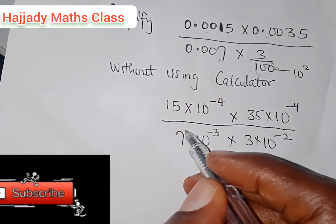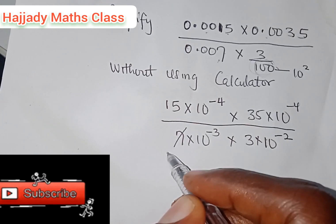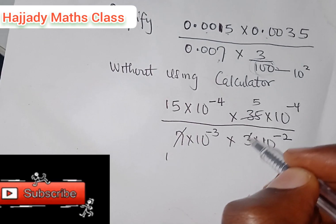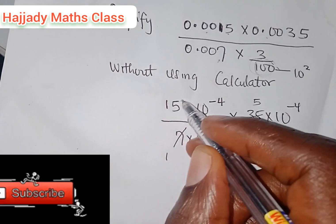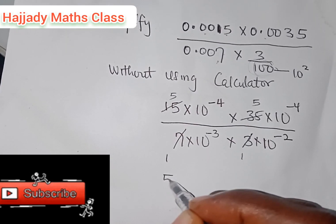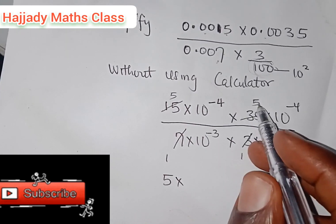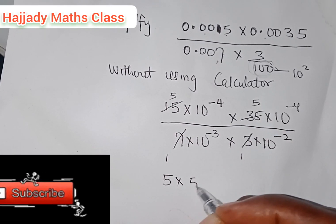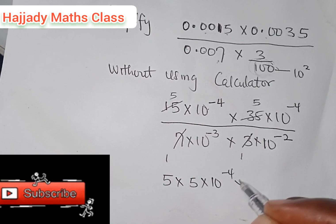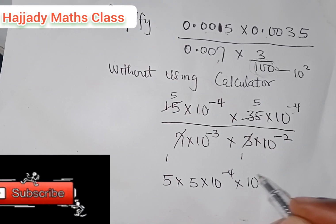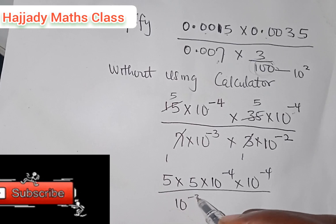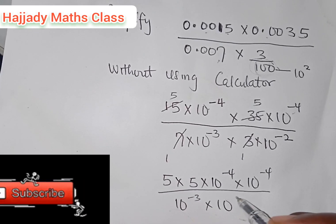Now solving this: 7 into 35 gives 5, and 3 into 15 gives 5, and 3 into 3 gives 1. Combining this together, we have 5 times 5. Let's combine it: 5 times 10 raised to the power minus 4, times 10 raised to the power minus 4, all over 10 raised to the power minus 3 times 10 raised to the power minus 2.